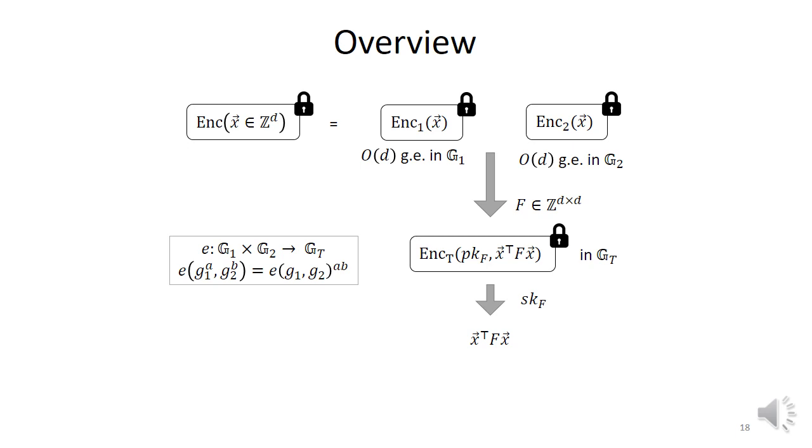So equipped with this bilinear map, we'll be giving an encryption of X in G1, a bunch of group elements, and another encryption in G2. And with this map, we can pair together these group elements, depending on a particular function F, to get another encryption in the target group of X times F times X, which is the evaluation of the degree two functions on X, under some particular public key that will depend on F. So there is some key homomorphism going on here. And the functional secret key will be the secret key that's associated with that particular public key. And this secret key will be tied to F, so that it only is useful for an encryption under PK_F and it will reveal X times F times X. It will not be useful otherwise.